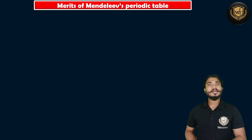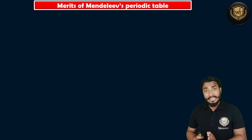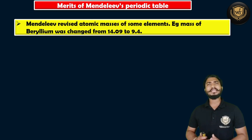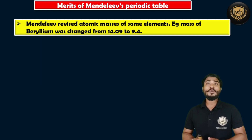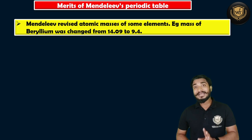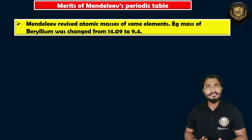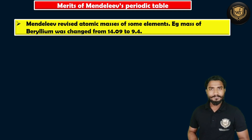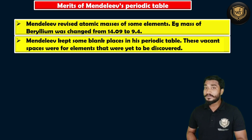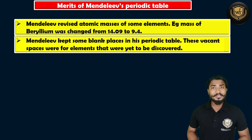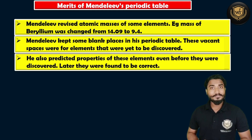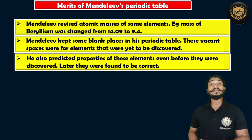The first and most important merit of his table was that he revised the atomic masses of certain elements. For example, the atomic mass of Beryllium before Mendeleev was 14.09, and Mendeleev revised it to 9.4. Based on these changes, the position of Beryllium was shifted. Another merit was that he left some blank spaces in his table for elements that were not yet discovered during his time. Later on, when these elements were discovered and scientists studied their properties, they found them to be similar to what Mendeleev had predicted.